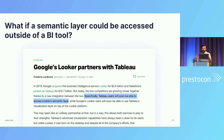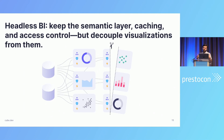The year this headless BI article went out, Google announced a partnership with Tableau, a long-term competitor of Looker, to provide Looker with an API that would allow Tableau users to connect to Looker and visualize data with Tableau instead of Looker itself. So here we enter the headless BI term: keep the semantic layer, caching, access control, and decouple visualizations, and you get the headless BI idea.